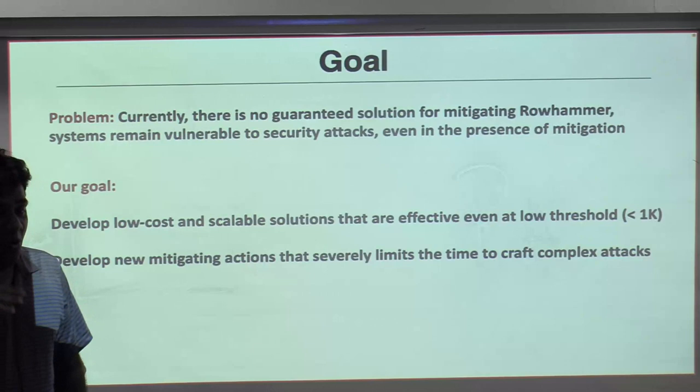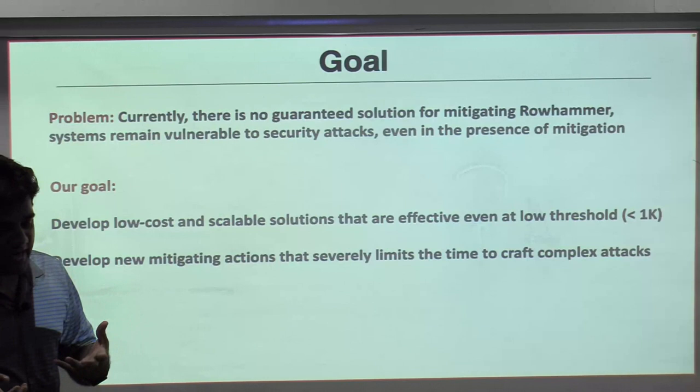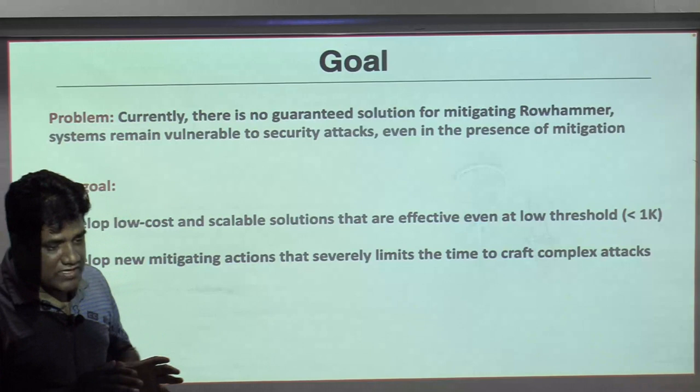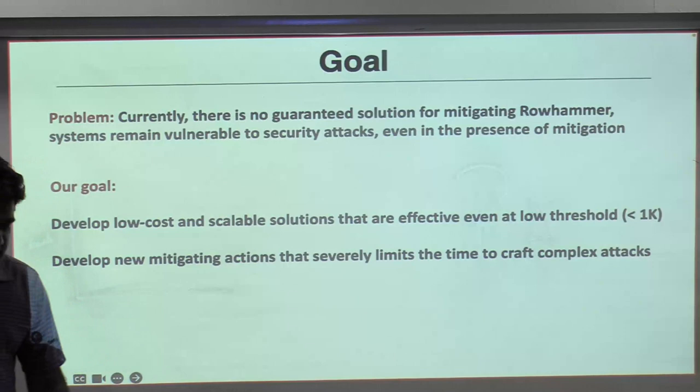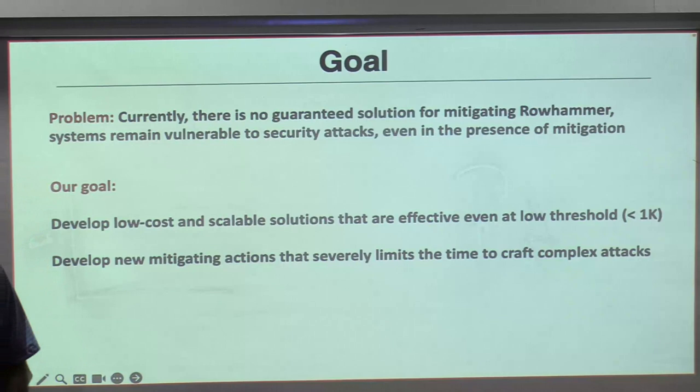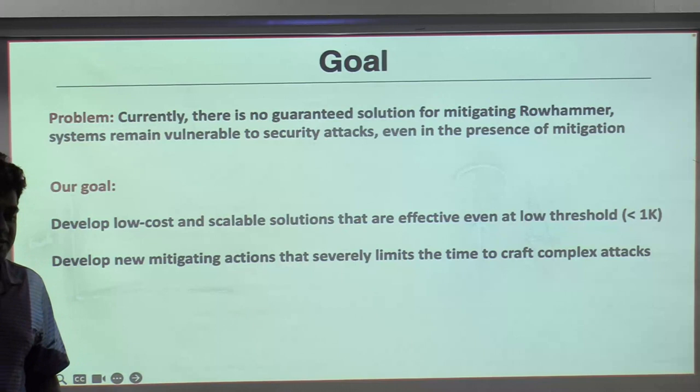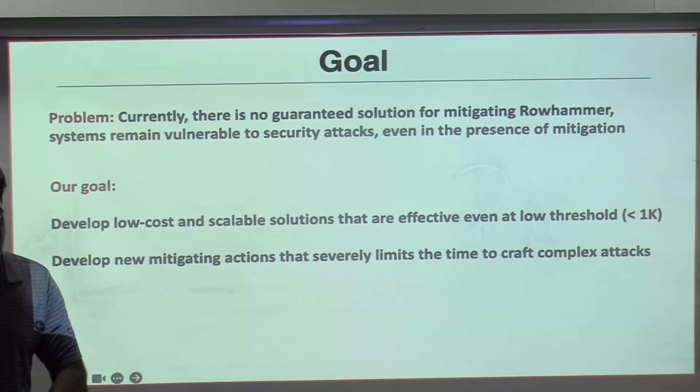All current systems use some type of DRAM — either LPDDR DRAM or DDR4 DRAM — and all of this DRAM is vulnerable to Rowhammer. So pretty much all current systems can have Rowhammer caused on them. Mobile phones, laptops, desktops, servers, supercomputers — everything. Memories are vulnerable to Rowhammer, and Rowhammer can be used for launching security attacks.